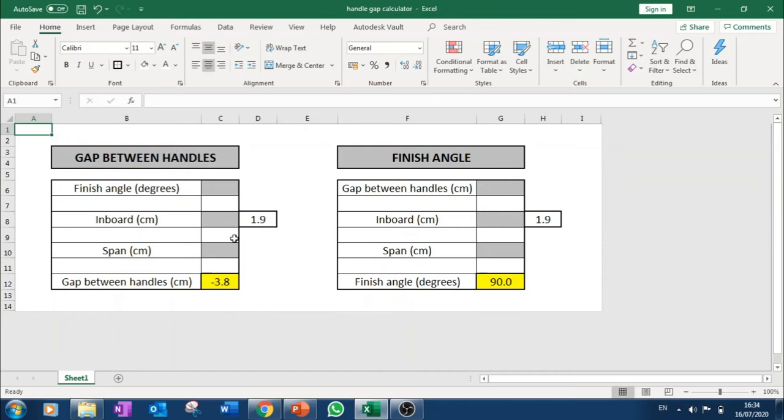Firstly, we're going to calculate the gap between the handles at the finish for a 40 degree finish angle. So I'm going to put 40 in here. I'm going to say I have an 88cm inboard and 1.9cm gets added to that because that's the width of the gate. And I'm going to say I have a 160cm span. You can see that if I finish with the handles 22.3cm apart, I will have a 40 degree finish angle.